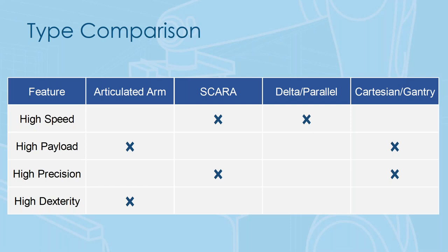There's a chart to help remember the key aspects of the four robot types — where they excel from a high-speed, high-payload, precision, or dexterity standpoint. Most robots have one or two areas where they excel most, with others where they're less suited. The articulated arm remains the most flexible, capable of checking the high-speed and high-precision box when needed, but that's where things generally shake out for best-suited applications.